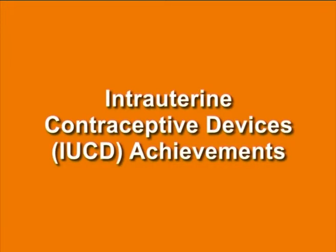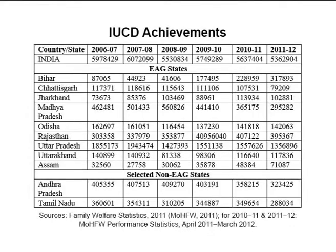Intrauterine contraceptive devices achievements: Table 8 on your screen shows that the acceptance level for IUCDs showed a drastic improvement in the 1990s, maintaining momentum until 2001–02, after which it declined in the later part of the last decade. This declining trend was observed in the non-EAG states as well. In 2006, the government made a new strategy to reposition the IUCD, resulting in a positive shift in acceptance in the EAG states, especially Bihar and Jharkhand.